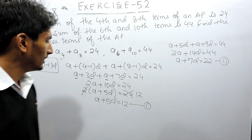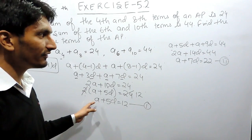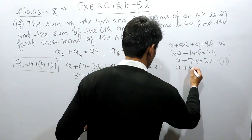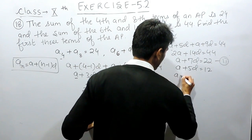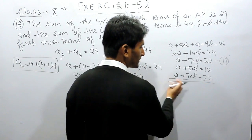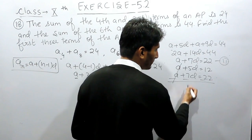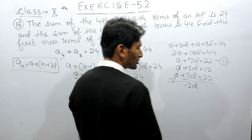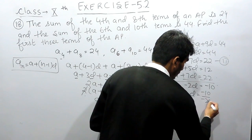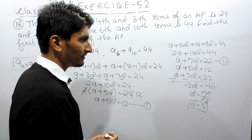Now we have 2 equations. We can solve them to get the values of A and D. Subtracting the first equation from the second: A plus 7D minus A plus 5D equals 22 minus 12. The A terms cancel, leaving 2D equals 10, so the common difference D equals 5.